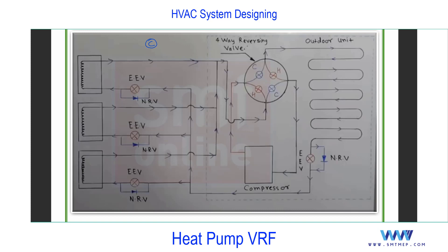You can see the four-way reversing valve. Inside it you'll find four valves. For cooling mode, two valves will be closed. If you switch to heating mode, those two valves open and the other two close. Apart from this, for all indoor units you'll find an NRV - a non-return valve. The rest of the system is the same.